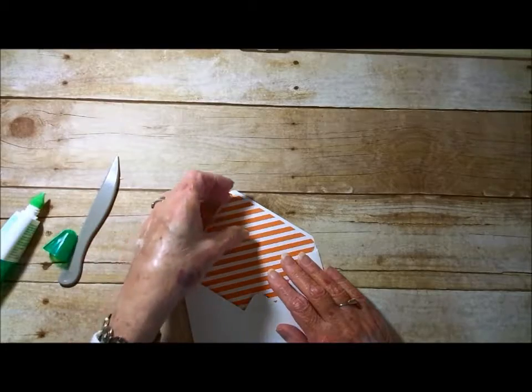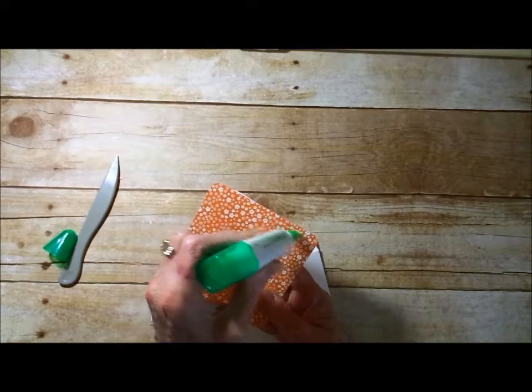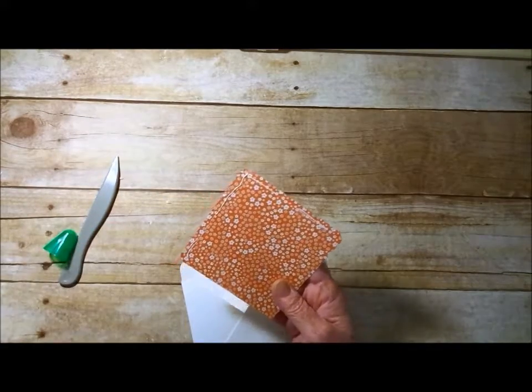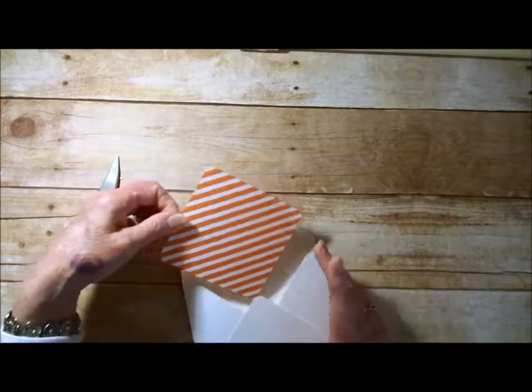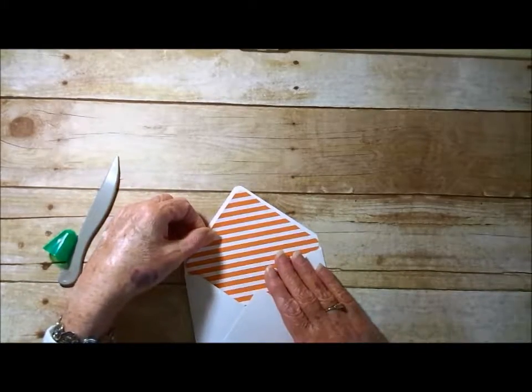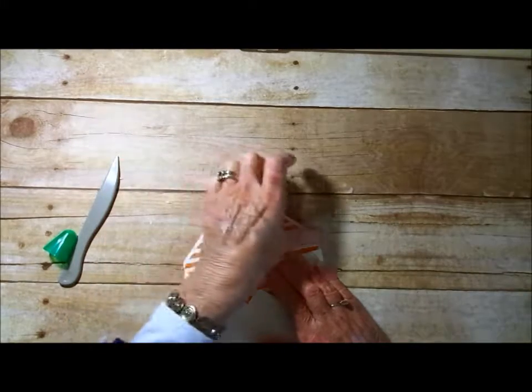So again with our Tombow, we're just going to apply it around the three sides. You don't want to apply it to the bottom because your designer series paper is going to have to move with the envelope. Insert it.